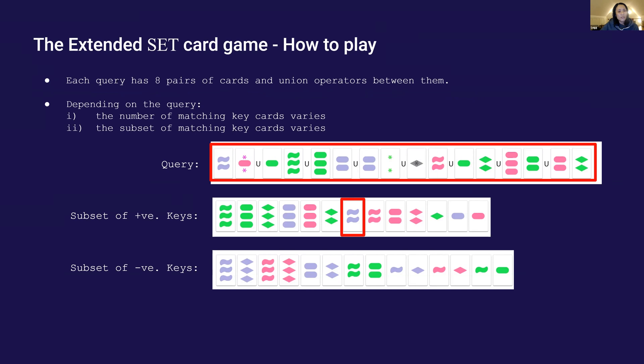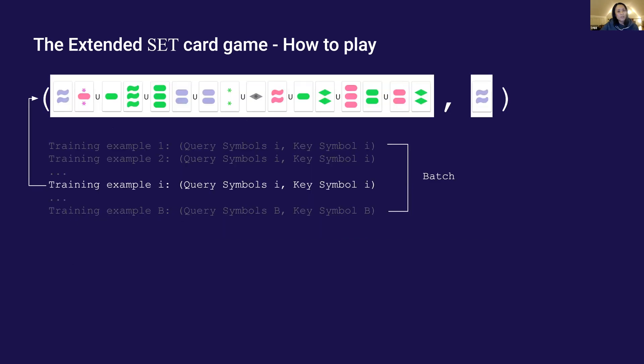A training example is a tuple of query symbols and a key symbol sampled from the matching positive keys. We can sample different queries and their keys this way to make a batch.